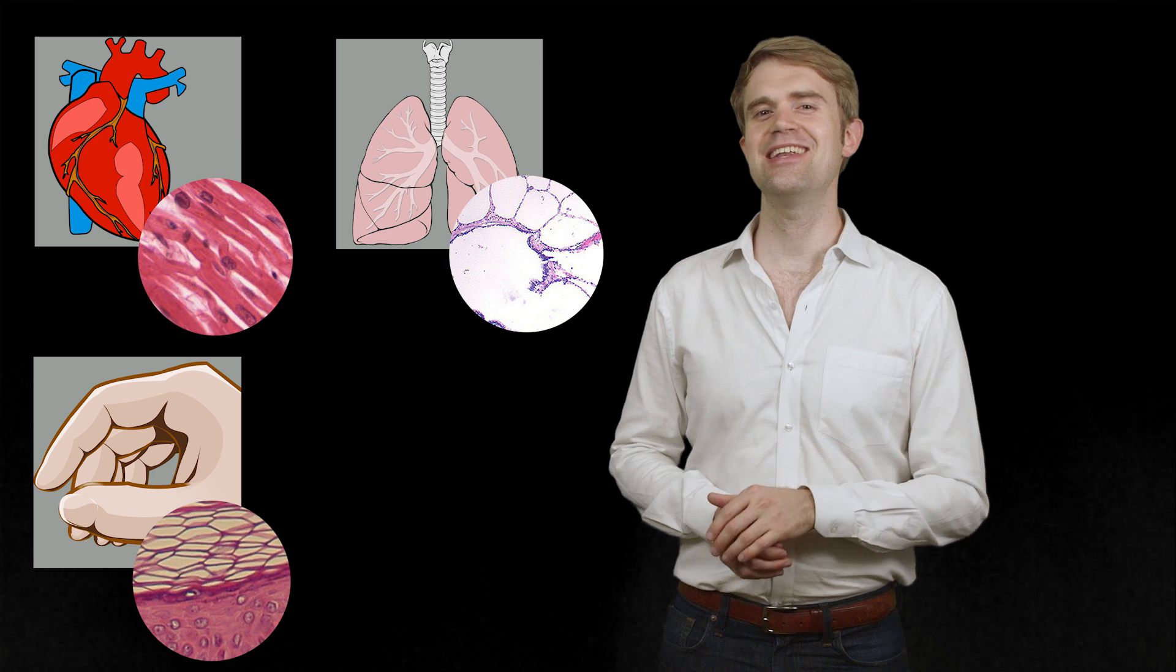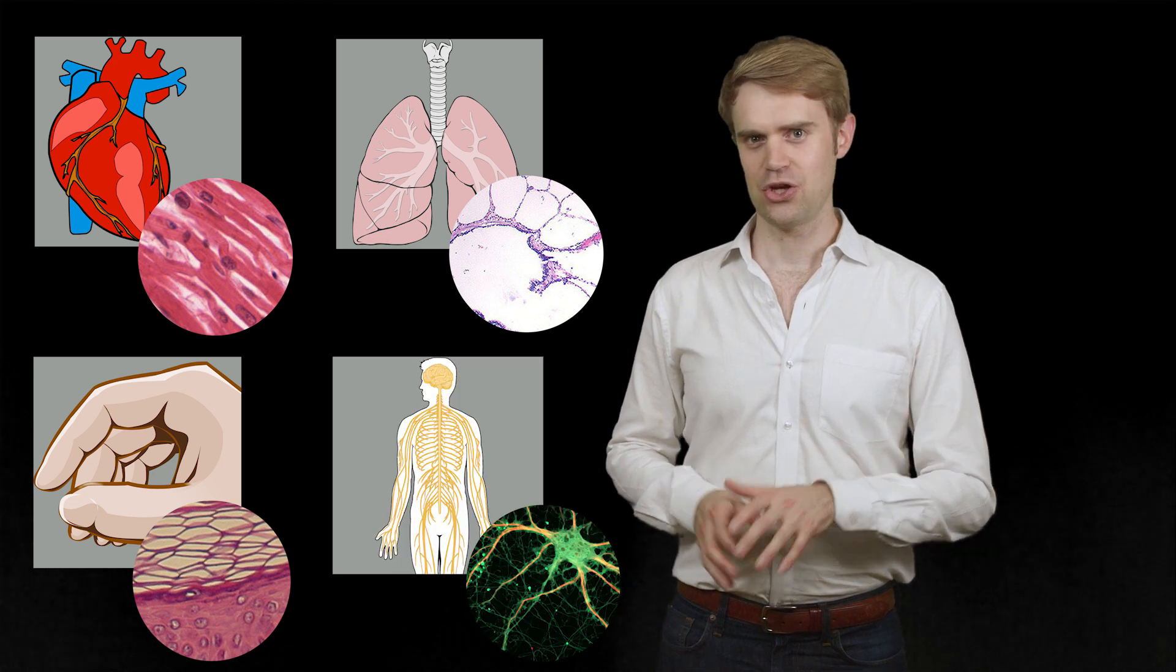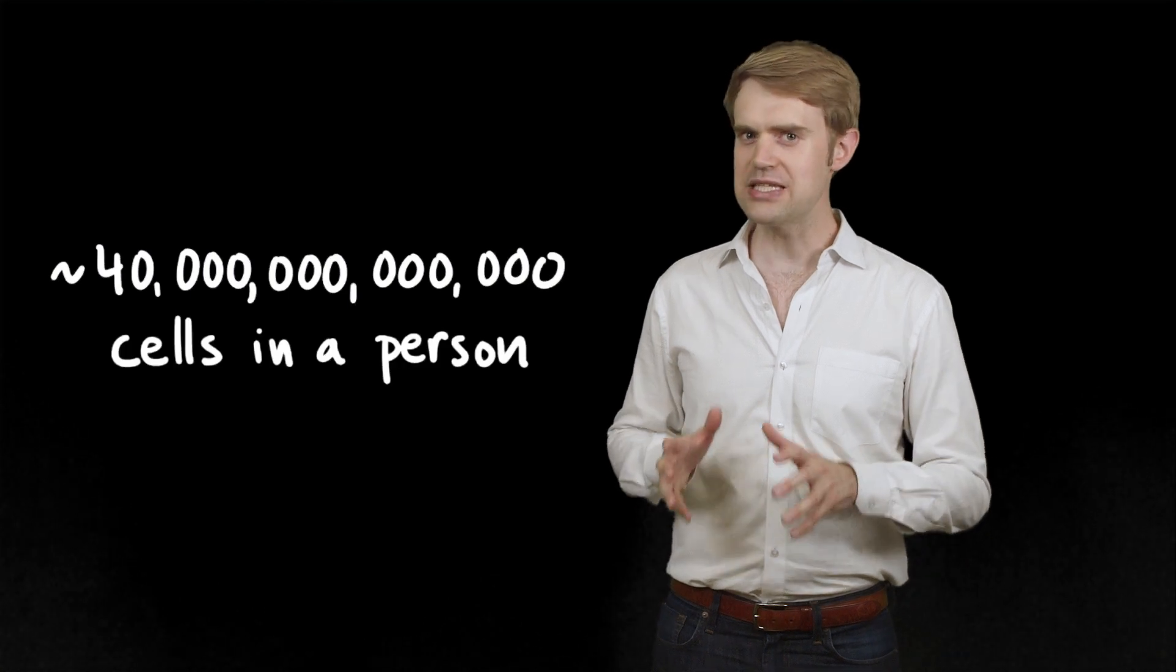Almost everything in your body is made of cells. Your heart is made of cells, and your lungs, and your skin, and your nerves. Your body is made up of about 40 trillion cells. They're really small.